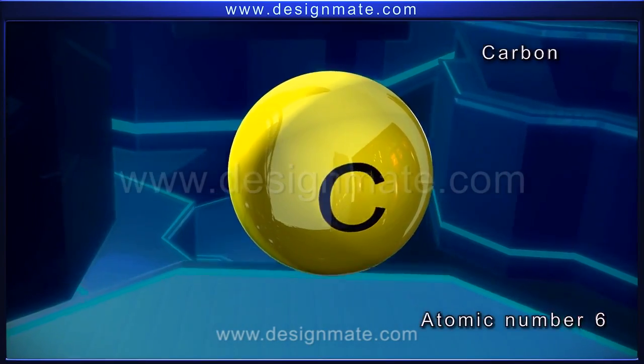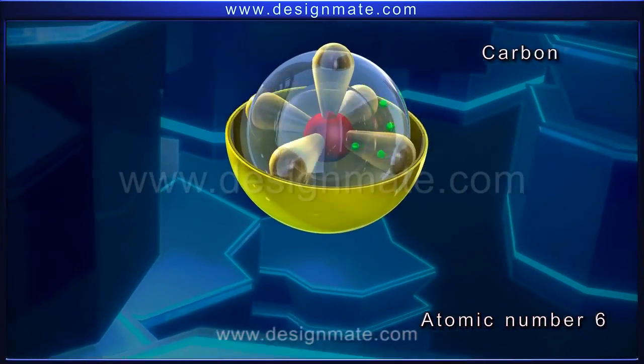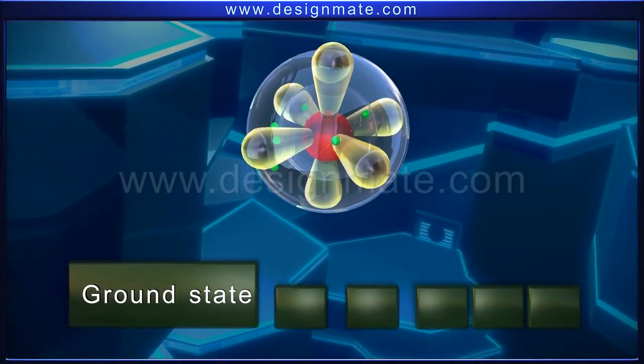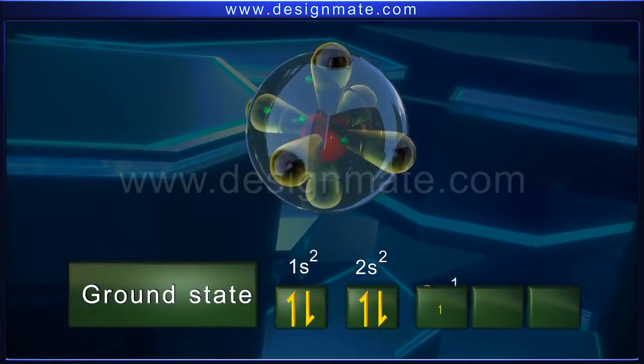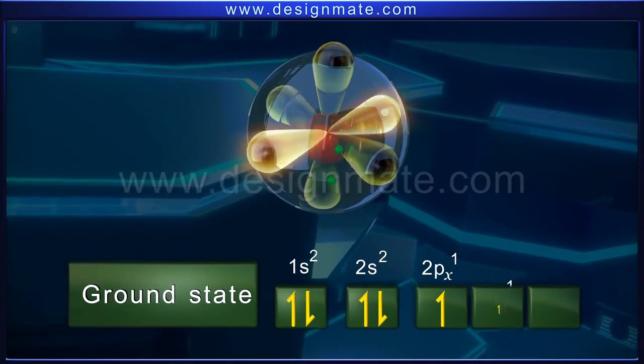Consider a carbon atom having atomic number 6 in the ground state. Its electronic configuration is 1s2, 2s2, 2px1, 2py1, 2pz0.